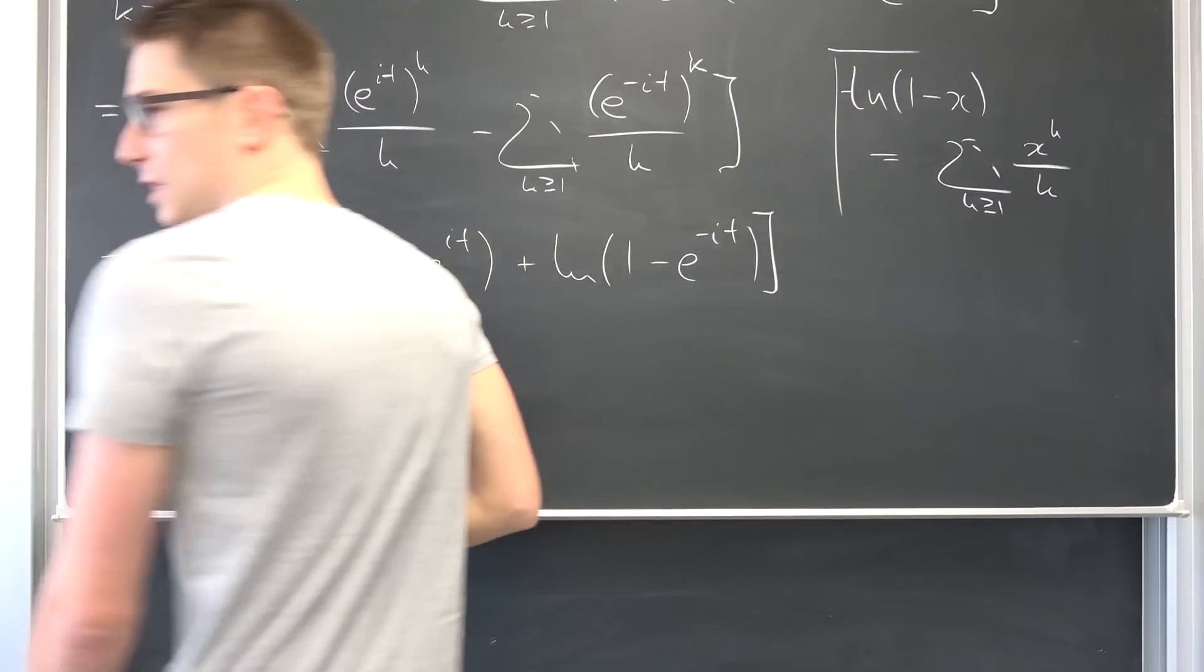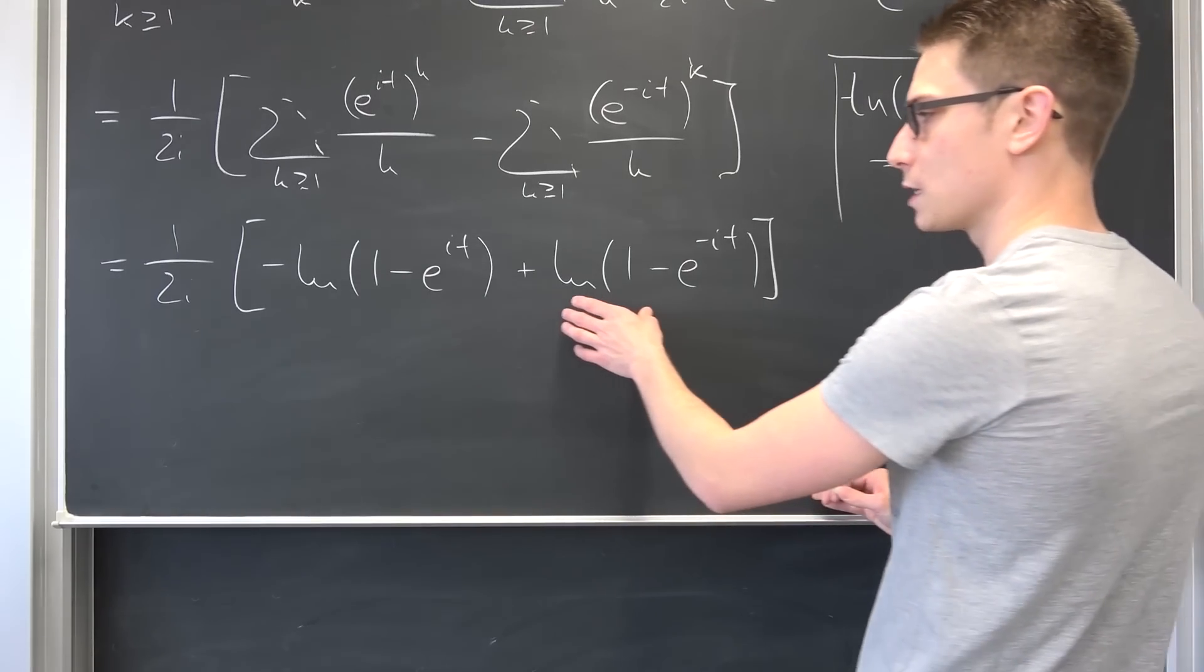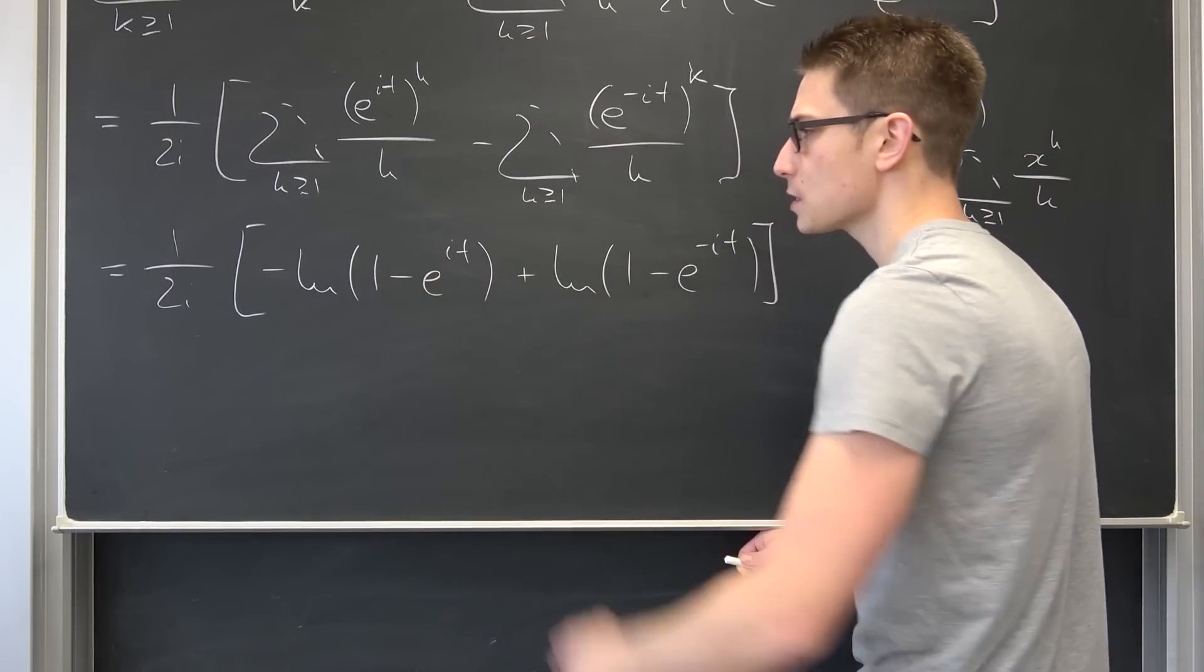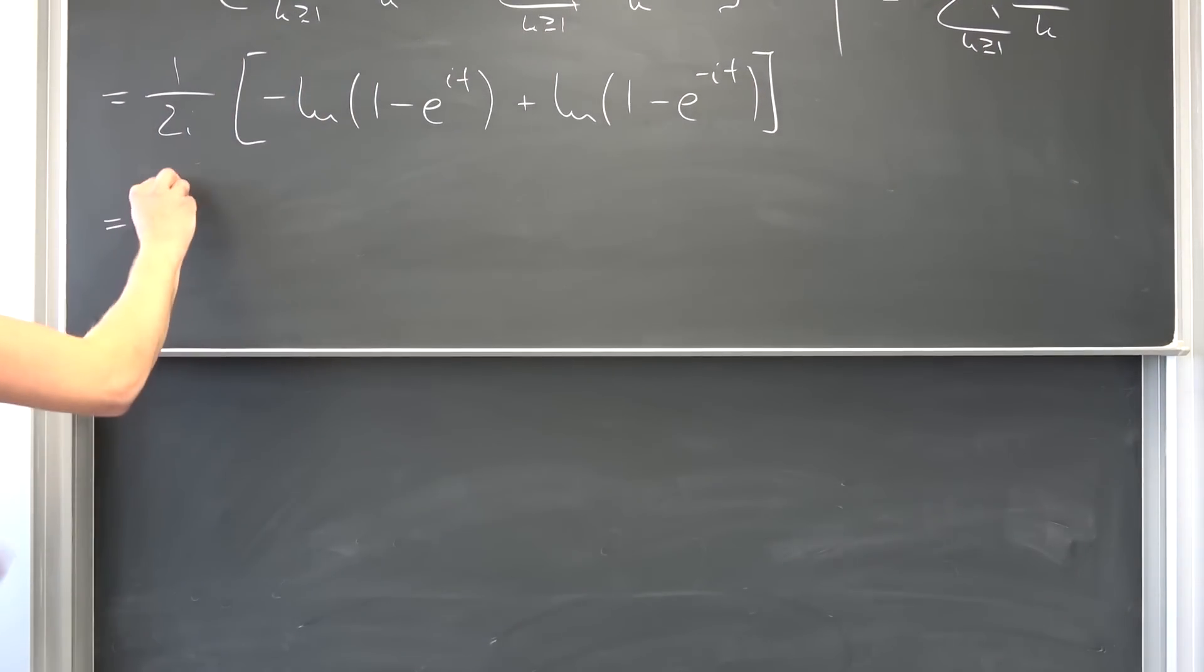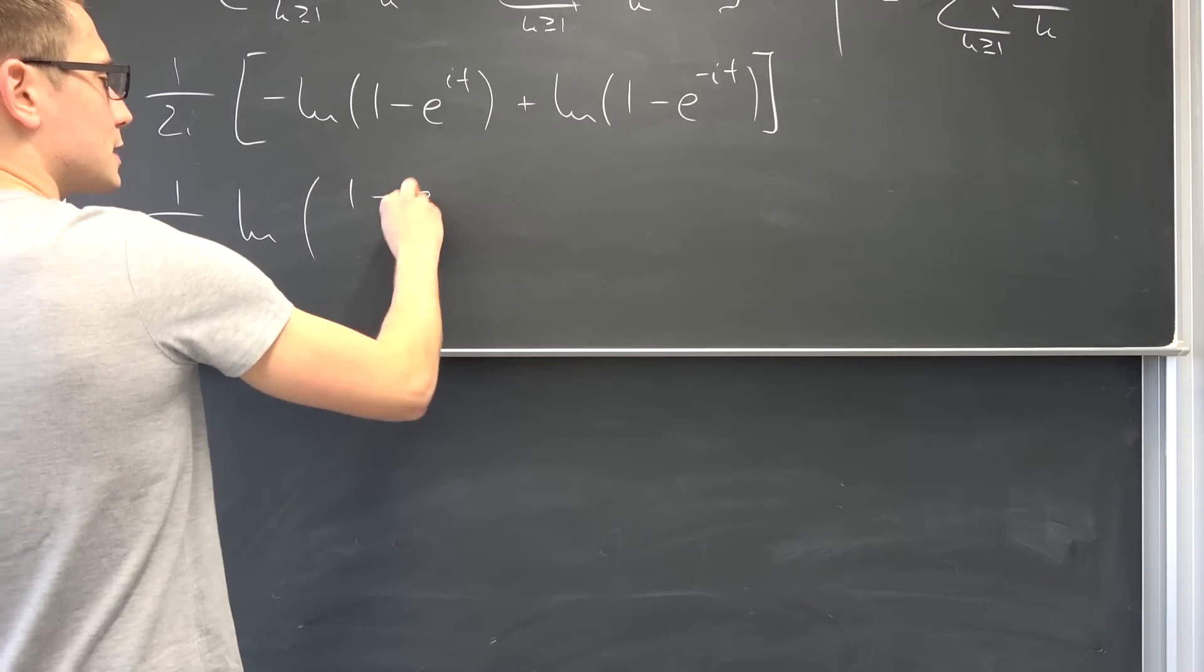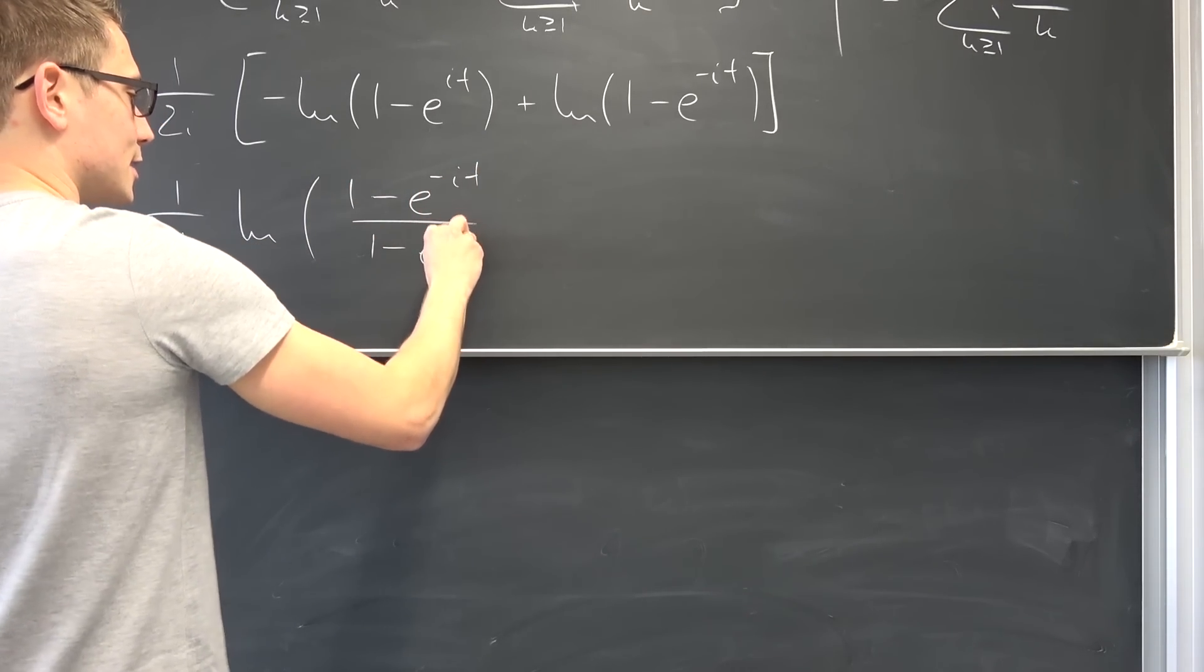And now it's just a matter of playing around a bit more. We can make use of the natural log properties to get natural log of 1 minus this over this. We're going to get 1 over 2i and then the natural log of 1 minus e to the negative it over 1 minus e to the it.